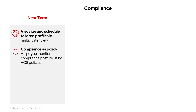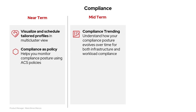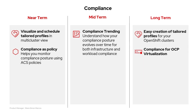On to compliance and the near-term goals. We're adding scheduling and visualization for tailored compliance profiles in ACS, helping you focus on specific compliance controls across multiple benchmarks and making tracking compliance across OpenShift clusters easier. Next, compliance as policy: ACS policies will help monitor compliance for both infrastructure and applications, expanding compliance checks to include applications starting with CIS benchmarks and Docker workloads. For mid-term goals, compliance trending introduces historical data for compliance standing, allowing organizations to track compliance trends over time, spot gaps, and take action for infrastructure and workloads. In long-term goals, we're aiming for easy creation of tailored profiles, simplifying how tailored compliance profiles are created for OpenShift clusters.